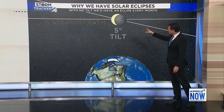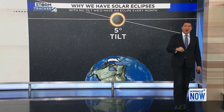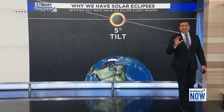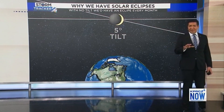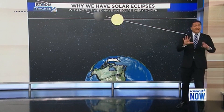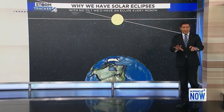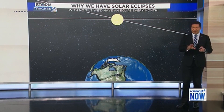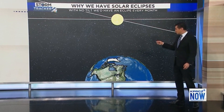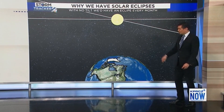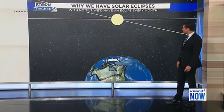Because of this 5-degree tilt, we get on average a total solar eclipse once every 18 months somewhere on planet Earth. It's not always the same place, because the Earth is also turning at the same time.